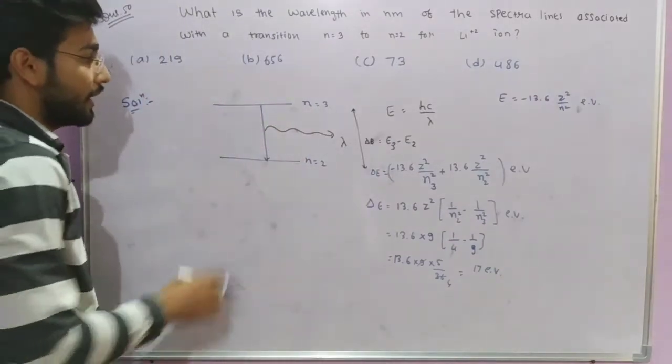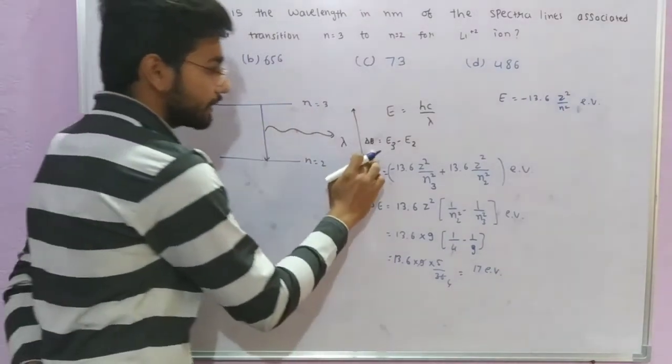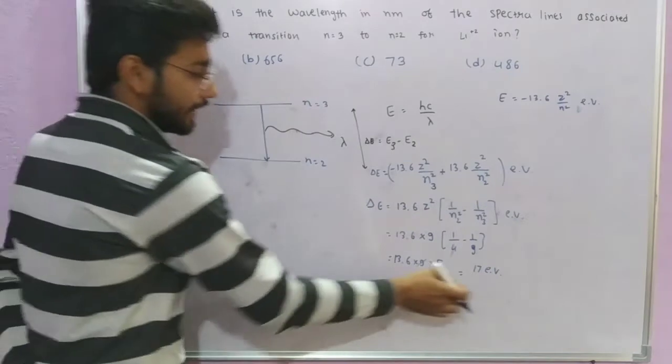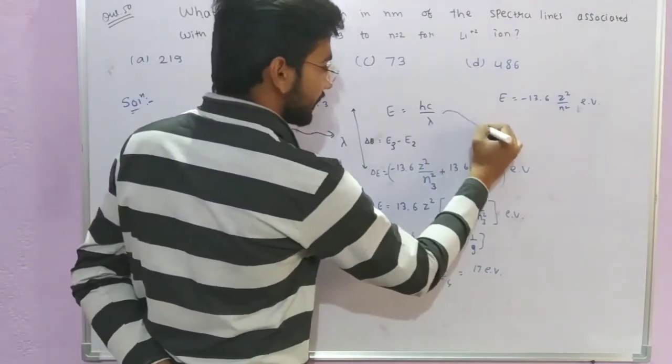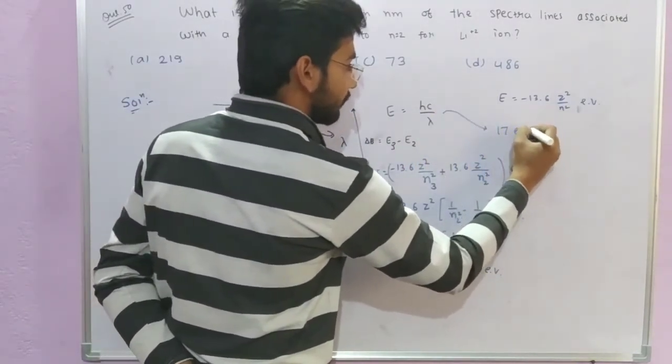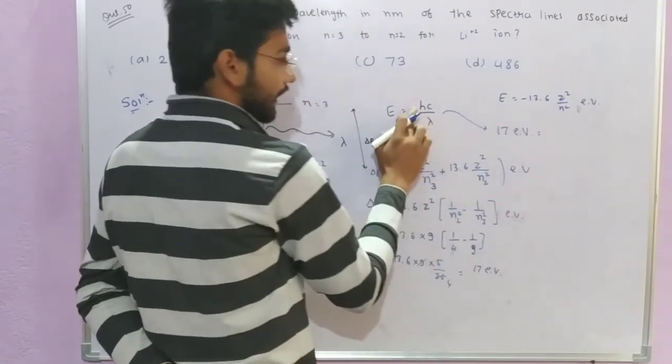The energy gap we got is 17 electron volts. This is given. Now we can calculate delta E: 17 electron volts equals hc upon lambda.